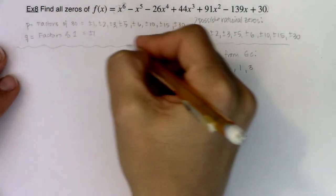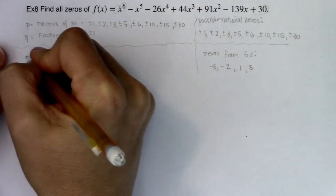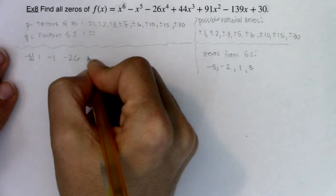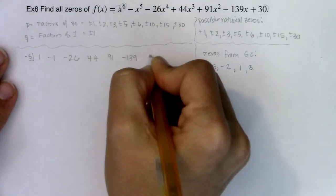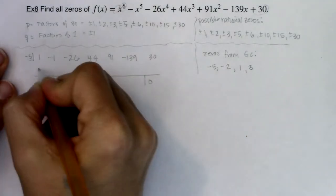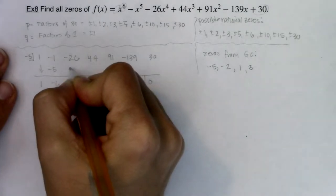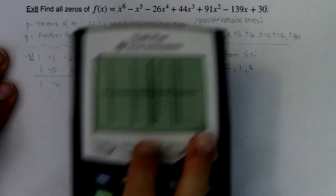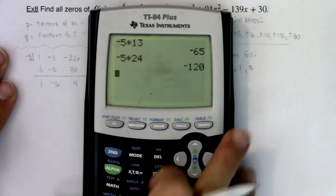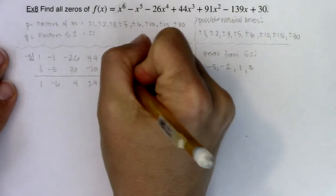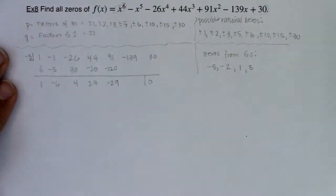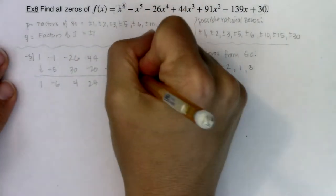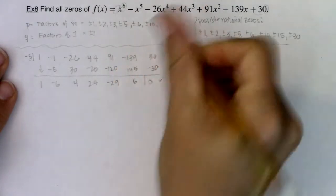I'll go in the order I have written. I'm going to use synthetic division. We got 1, -1, -26, 44, 91, -139, and 30. And I should be getting a zero here. So we've got 1, -5, -6, 34, -20, 24. Let me get my calculator to start to crunch these. This would be -5 times 24, so -120. If I add 91 to it, I'm going to be at -29. Let's do -5 times -29, 145. This would be positive six, -30, zero. That checks.